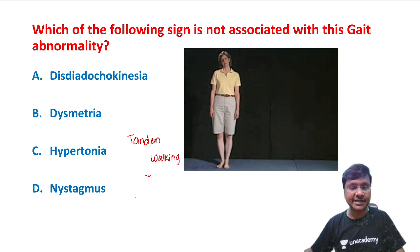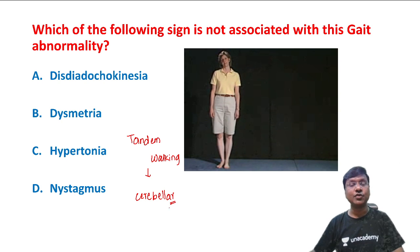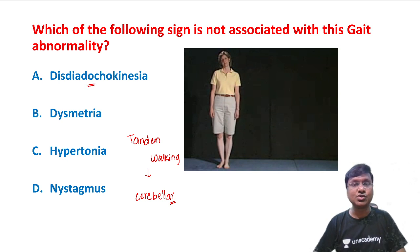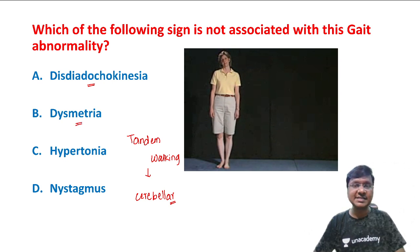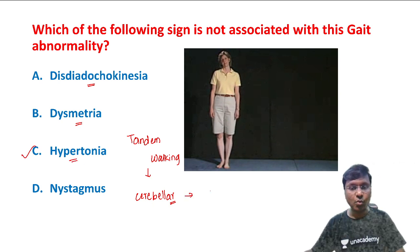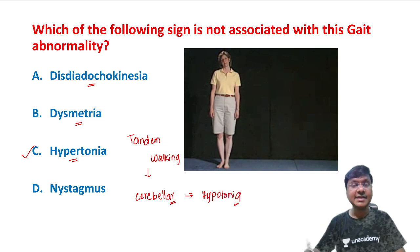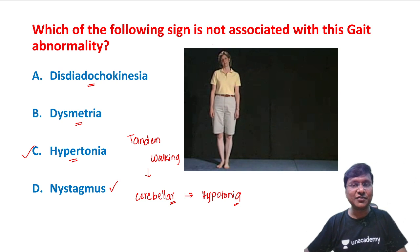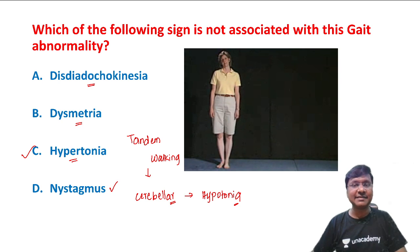Tandem walking gets affected in cerebellar disorders. In cerebellar disorders, you will have dysdiadochokinesia and dysmetria. You will NOT have hypertonia — what you will have is hypotonia. Cerebellar lesions also present with nystagmus. So the sign NOT associated with this gait abnormality is hypertonia; hypotonia is the correct answer.